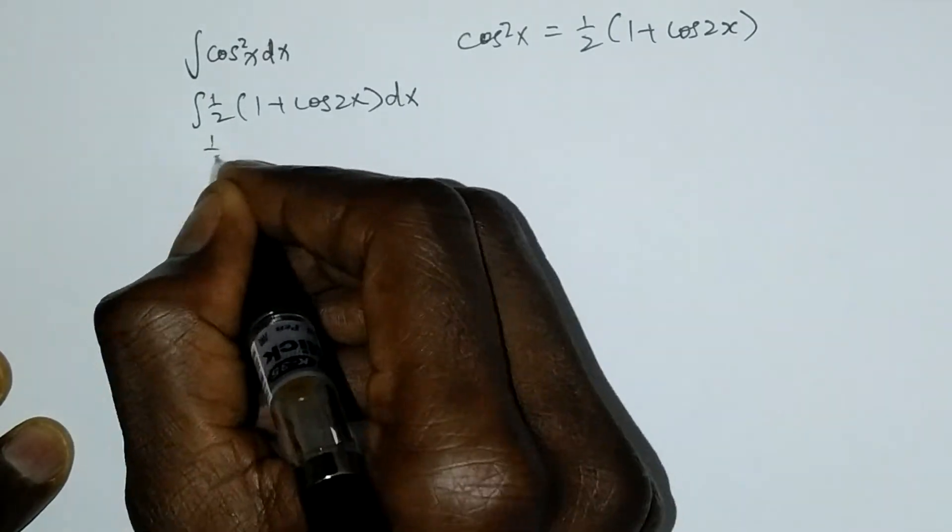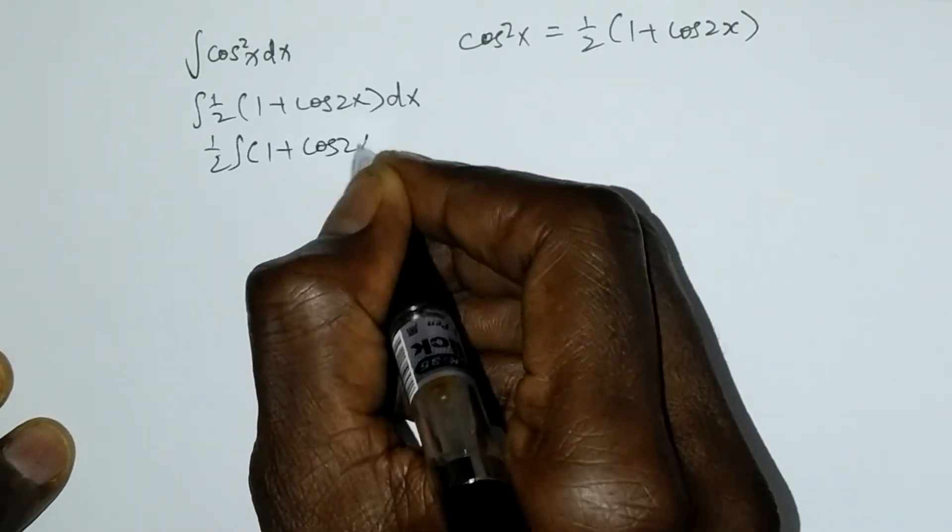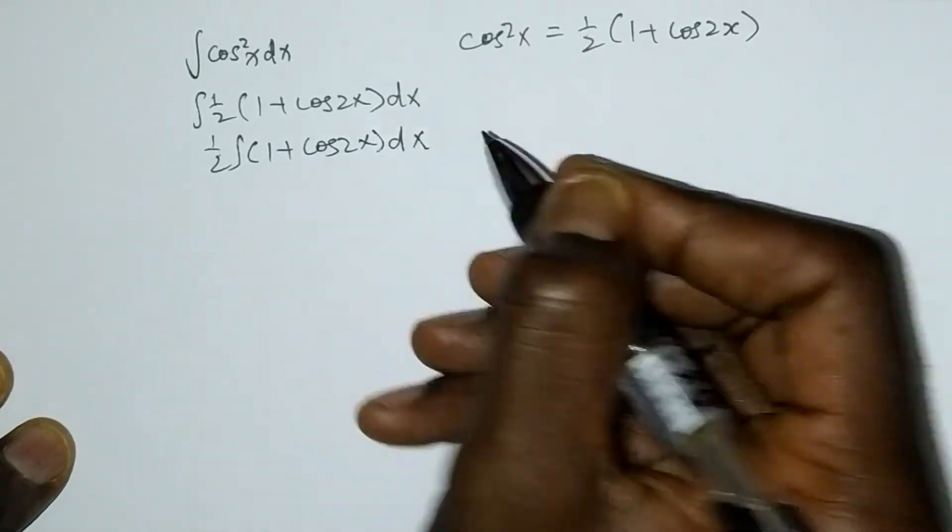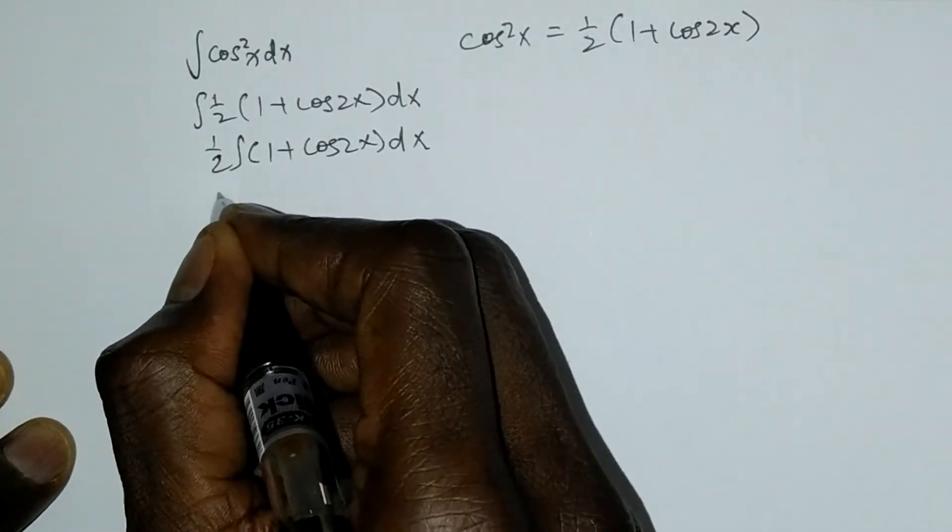Factor out 1/2 of integral (1 + cos2x)dx. We can separate this, it's going to be 1/2 of...